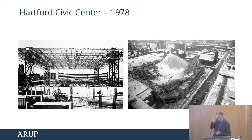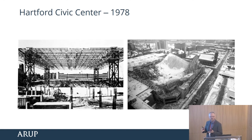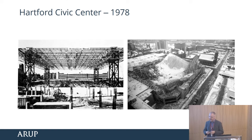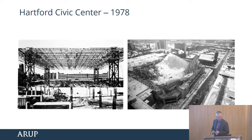January 1978. There were 5,000 basketball fans watching the home team play. Then a mere six hours later, at about quarter past four in the morning, during heavy snowfall, the Hartford Civic Centre roof collapsed under the weight of wet snow. Six hours earlier, very few of those fans would have survived, but as it was, nobody was hurt. Ironically, the snow load was only about three quarters of the actual design load. So something went seriously wrong here.